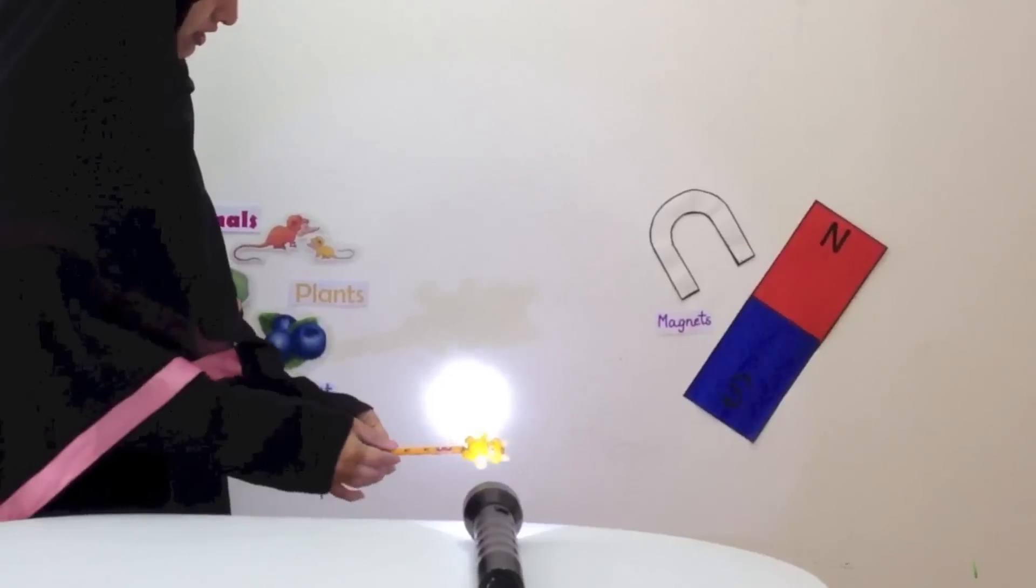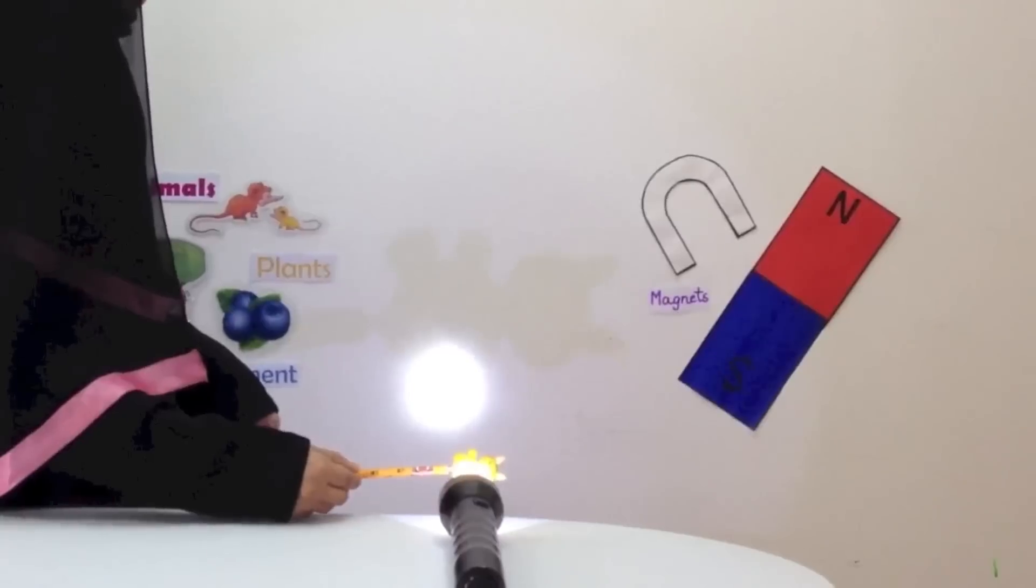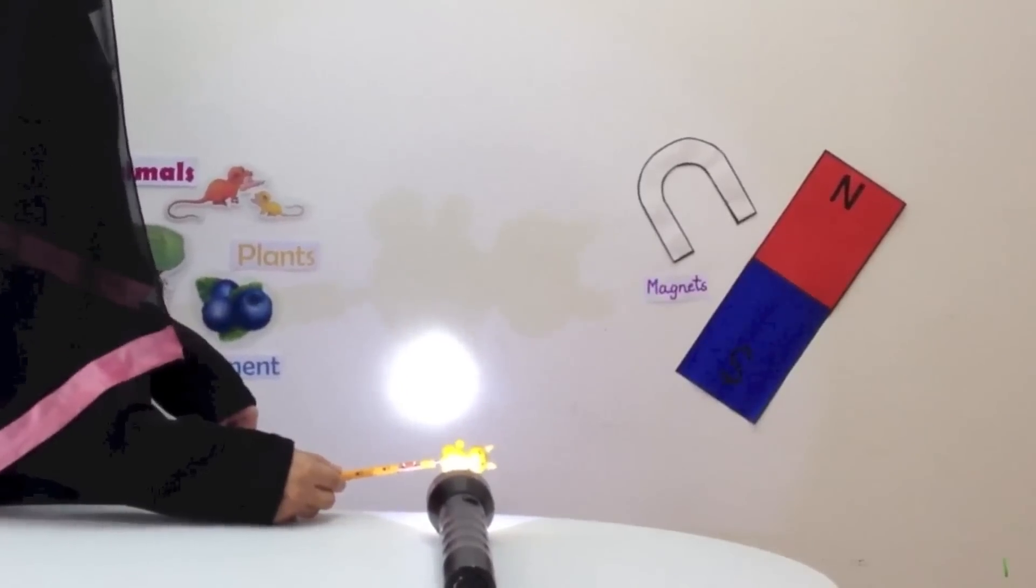Observe carefully. Here you can see the shadow of the cat. It's getting bigger and bigger as I come nearer to the source of light.